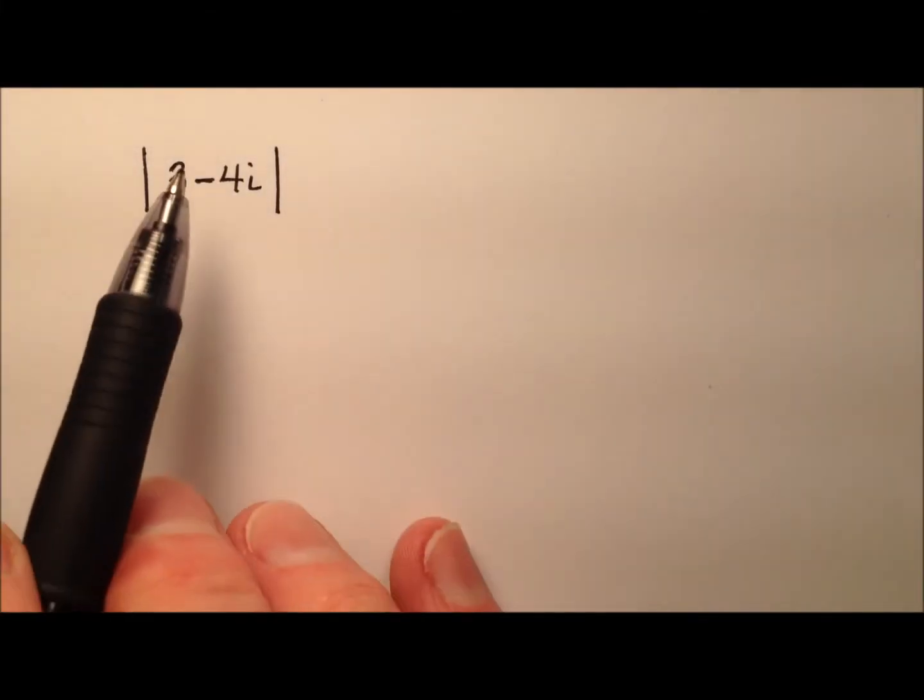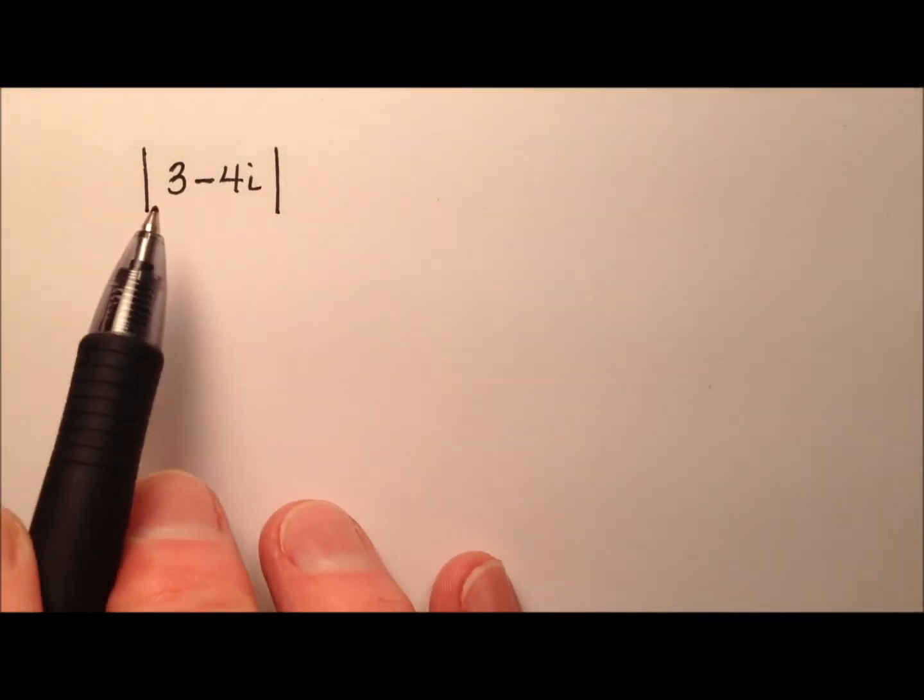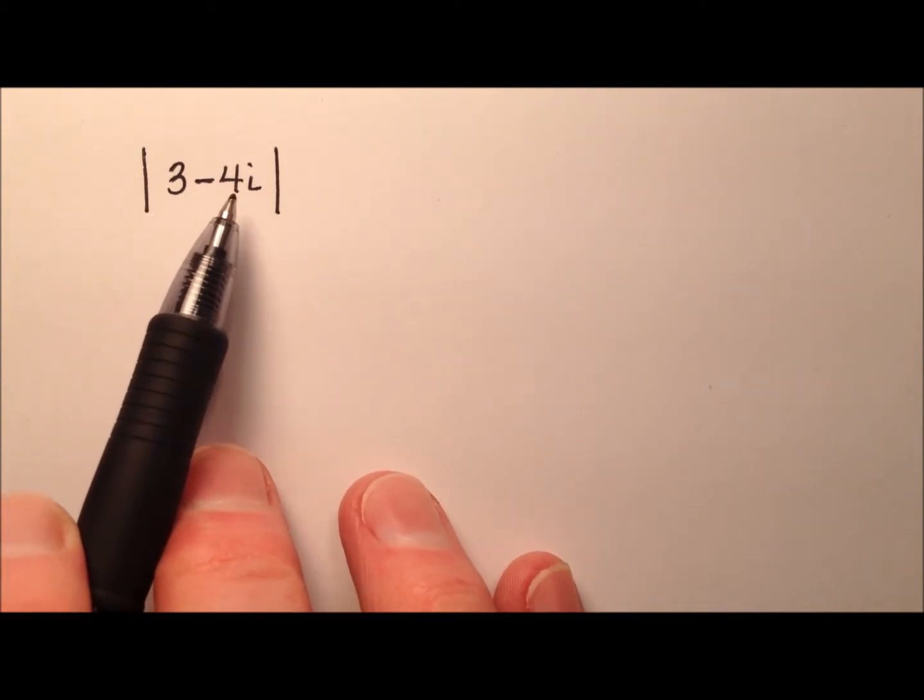In this example, we're going to calculate the absolute value for the complex number 3 minus 4i.